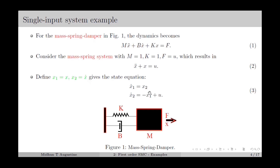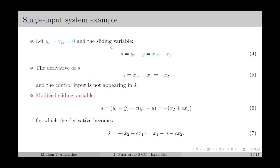We are using this system to illustrate the first order sliding mode control. We select the sliding variable as the output error, which is yr minus y, where yr is the output reference and y is the actual output. Considering x1 as the output, the derivative of the sliding variable s-dot will be x1r-dot minus x1-dot. Setting x1r equal to 0, this gives s-dot as minus x2. Here we can see that the control input is not appearing in s-dot, so we cannot use first order sliding mode control with this sliding variable.